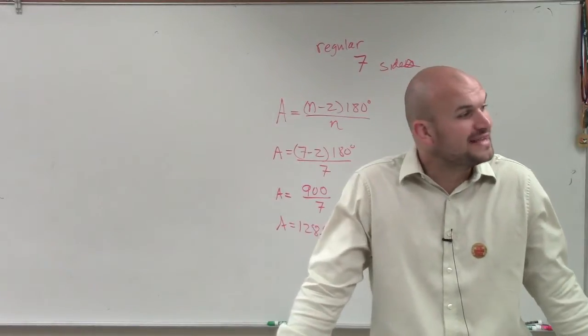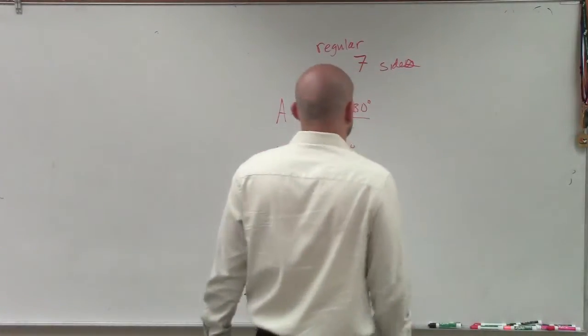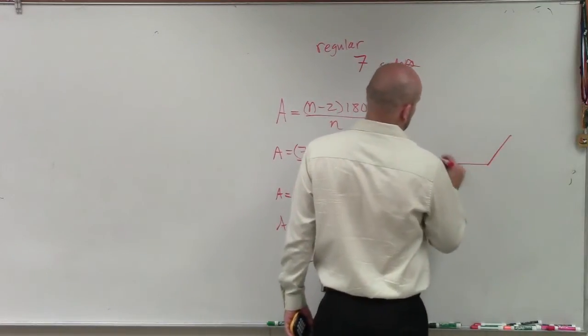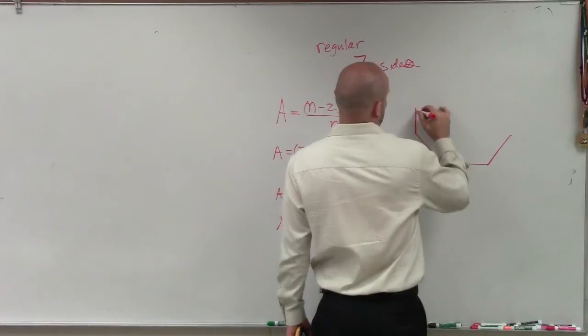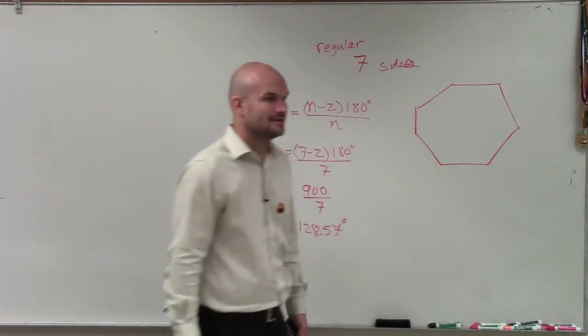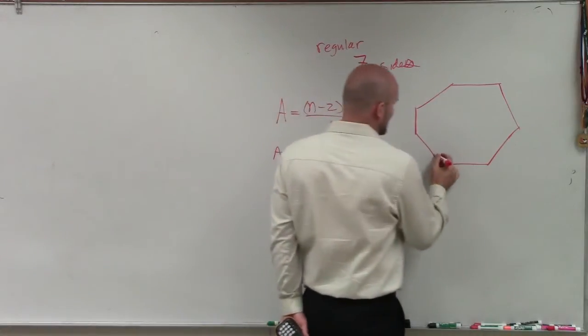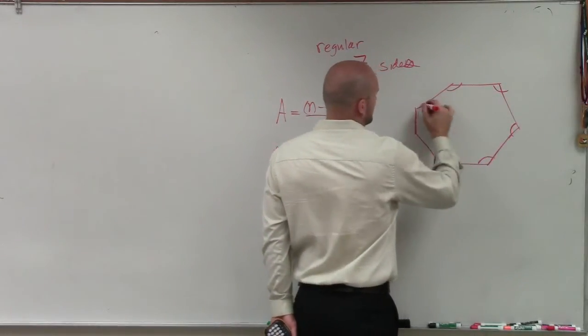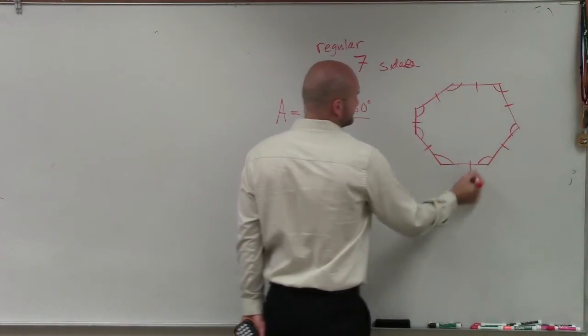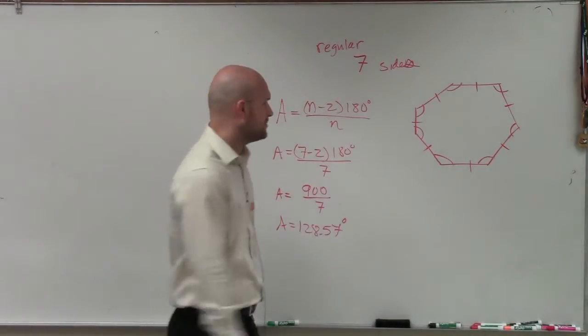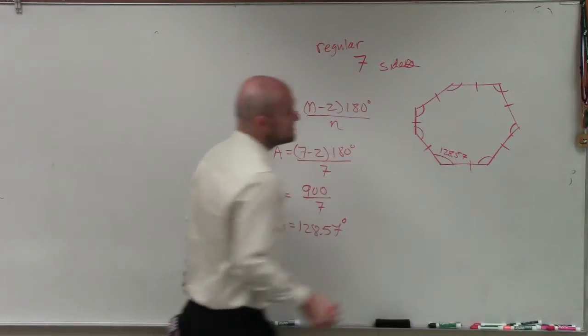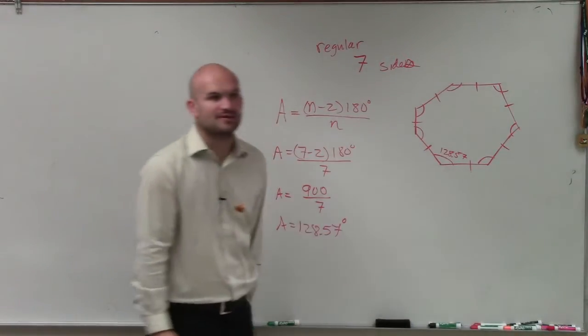But then they're asking, what about the measures of the exterior angles? Here's my regular heptagon - all these angles and sides are equal to each other. All of these interior angles are 128.57 degrees.